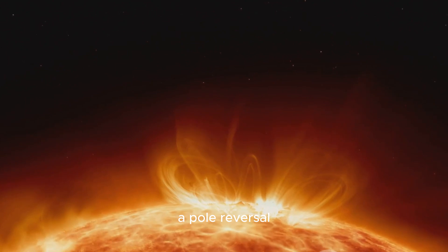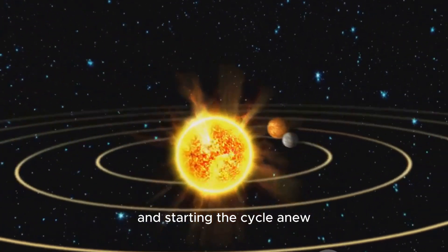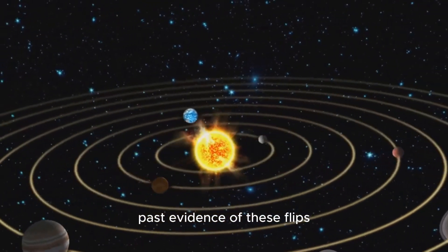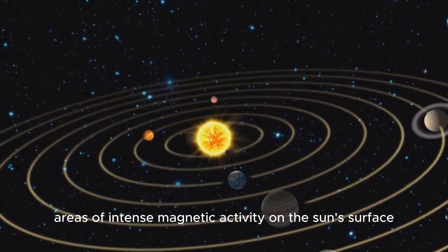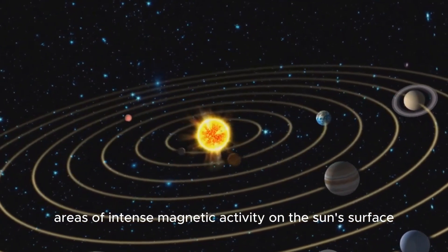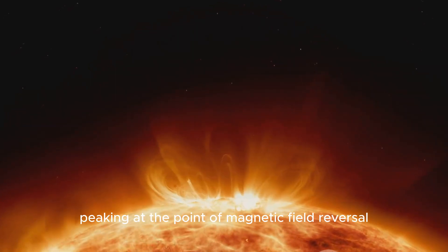A pole reversal. The sun's north and south poles flip, essentially resetting the magnetic field and starting the cycle anew. Past evidence of these flips can be found in the form of sunspots, areas of intense magnetic activity on the sun's surface. Their frequency follows the same 11-year cycle, peaking at the point of magnetic field reversal.